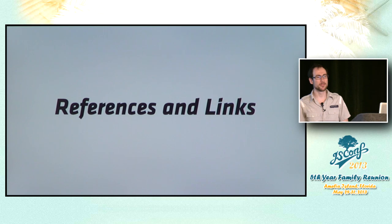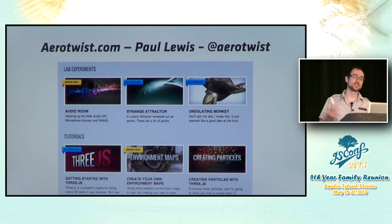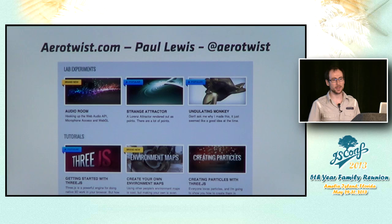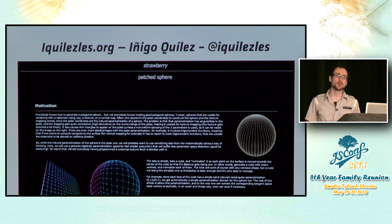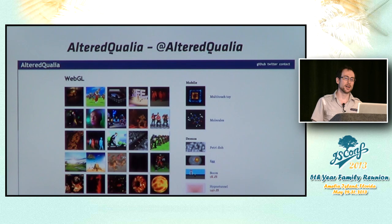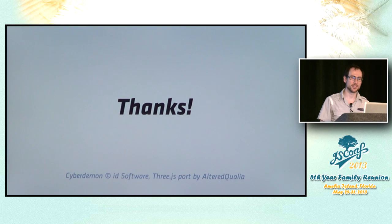That's pretty much it. I want to leave you with a couple of resources: Aerotwist.com by Paul Lewis has beautiful, well-written, straight-to-the-point articles — mostly Three.js, which is also what I use because it handles the boilerplate. There's Inigo Quilez's site, a treasure trove of demo scene techniques and interesting mathematical things. Mr. Doob is the author of Three.js and has a site full of demos. And Altered Qualia — their implementation and port of the Cyberdemon model is what I used for this presentation. Thank you very much.